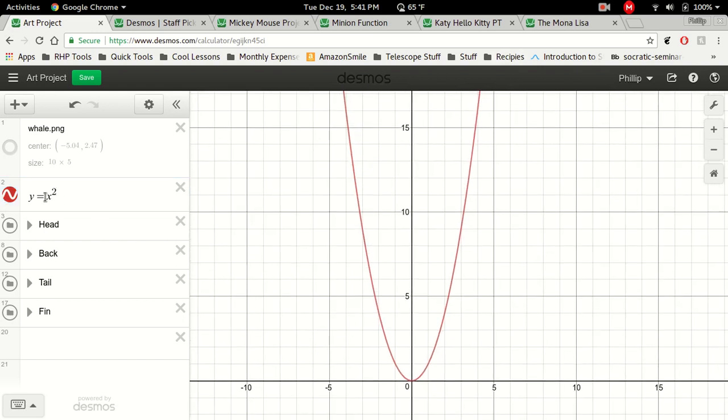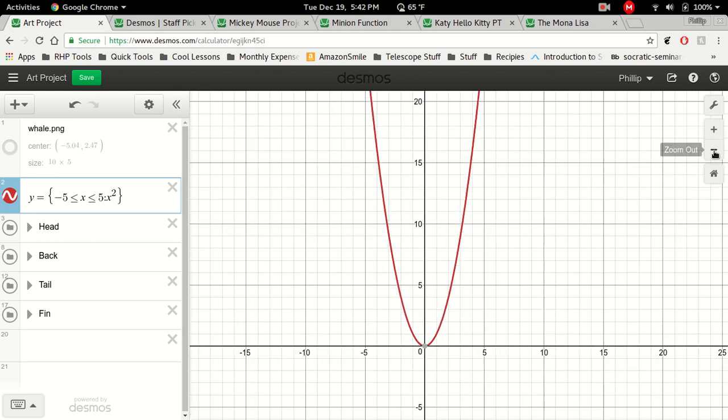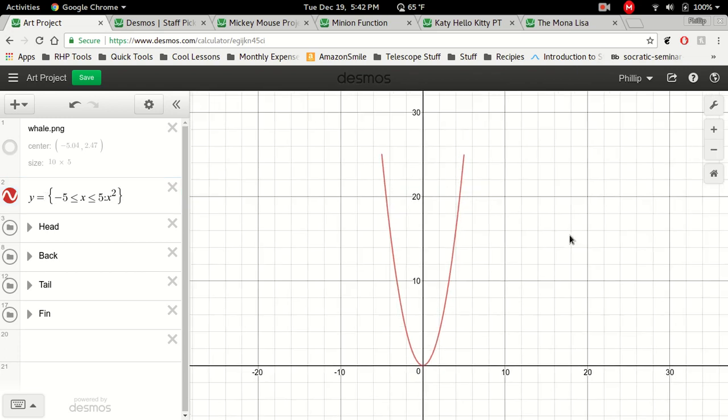If we use our curly braces, we're going to go from negative 5 less than or equal to x less than or equal to positive 5, semicolon. And now if we scroll out a little bit, we end up with a parabola that just goes out to x equals 5 and x equals negative 5.